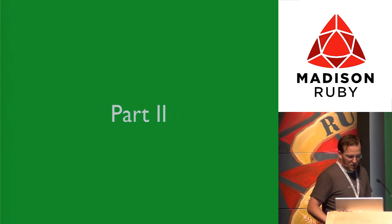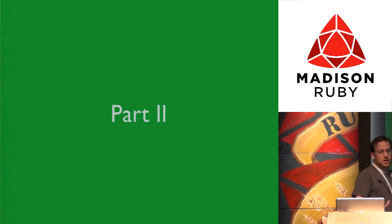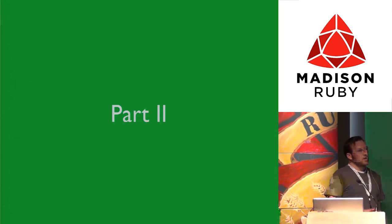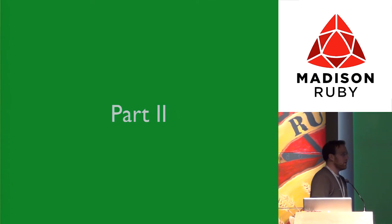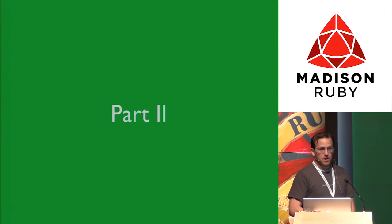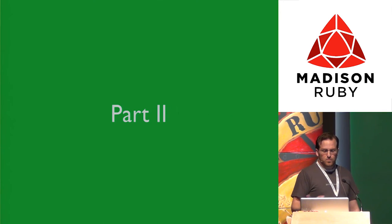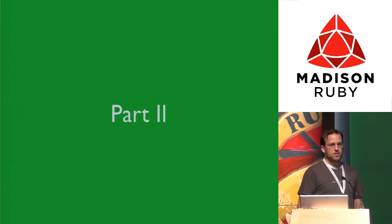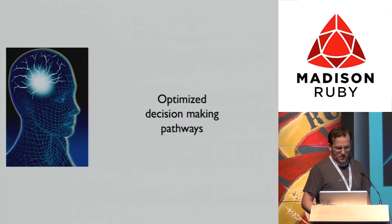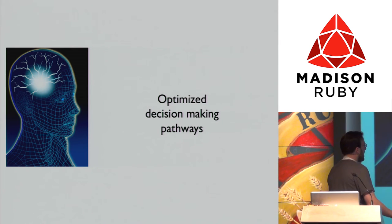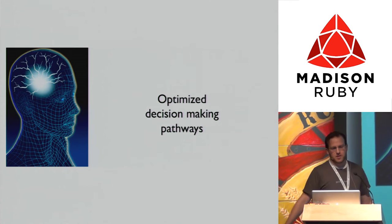All right, so part two goes into practical application for everyone about how we can actually do this. The other two times I've given this talk it was a longer talk and I didn't include this, so I'm going out on a limb here. I just added these slides this week. Optimize the decision pathways or decision-making pathways—we've got these in our head, our brain has these.